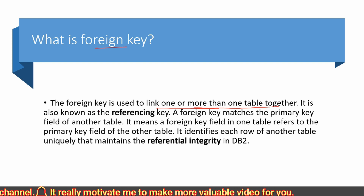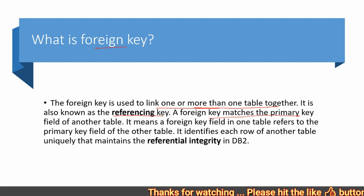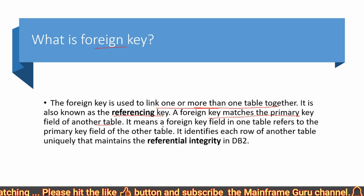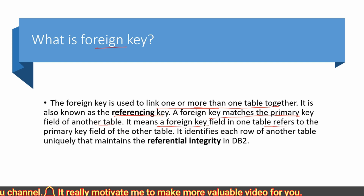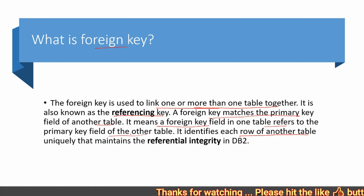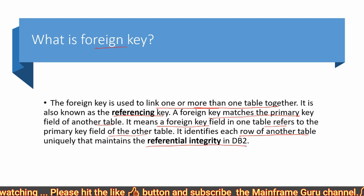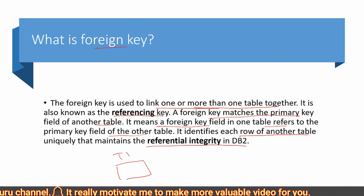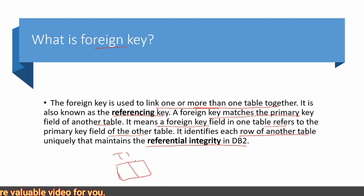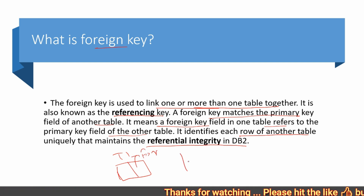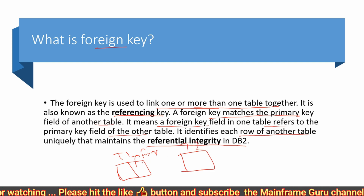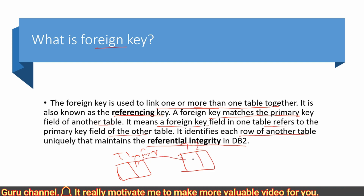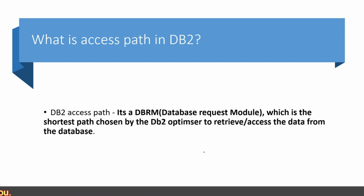The next question is: what is a foreign key? A foreign key is used to link one or more tables together. It is also known as a referencing key. A foreign key matches the primary key field of another table — it identifies each row of another table uniquely, maintaining referential integrity. For example, T1 table contains the foreign key that refers to the primary key of T2 table.